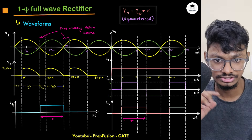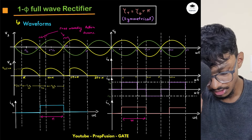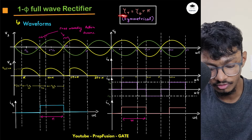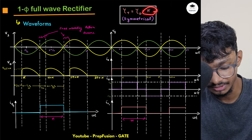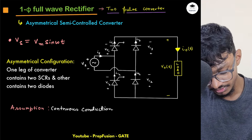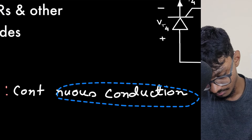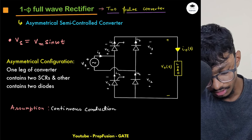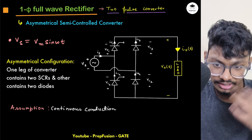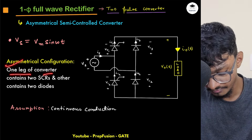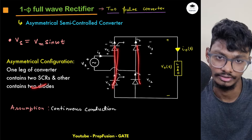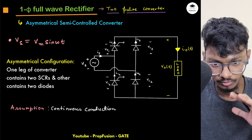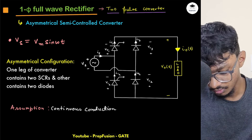This is called the symmetrical semi-converter because the conduction periods of the thyristor and the diode are both equal to pi. In the asymmetrical configuration, the conduction periods of the diode and the SCR are different — one leg contains two SCRs and the other leg contains two diodes.